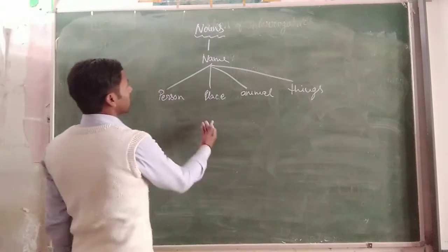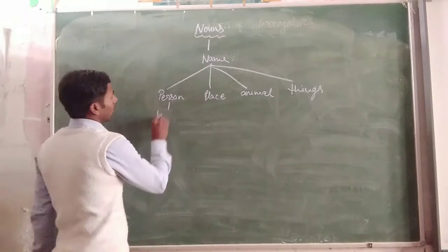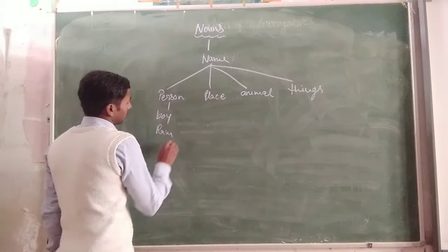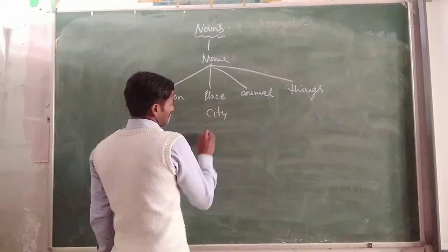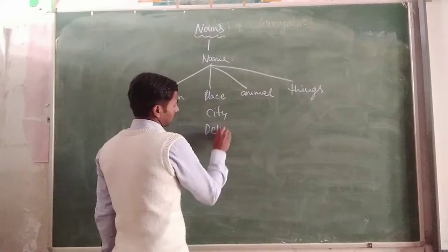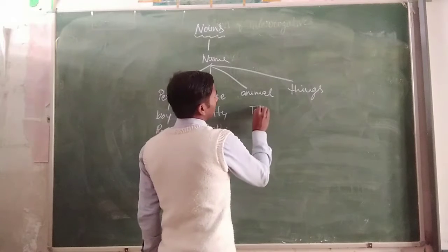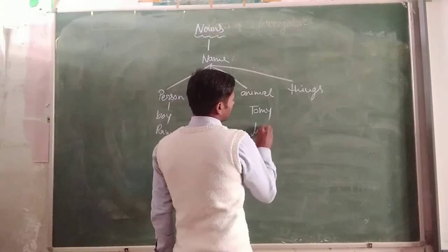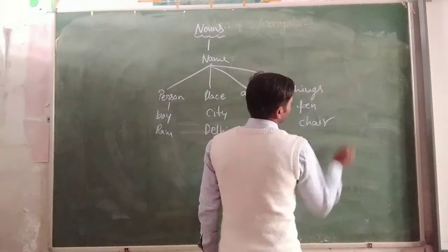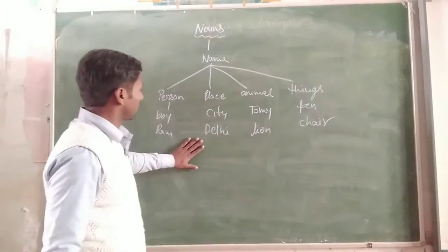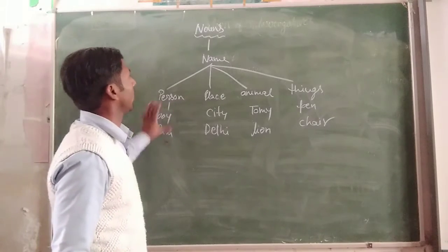We can simply say that a noun is the name of a person, place, animal, or thing. Like any person's name — boy, Ram — it is a person name. And if the place name — city, gallery — it is a place name. An animal, like Tommy. And things like paint, chair — all these naming words are known as noun.